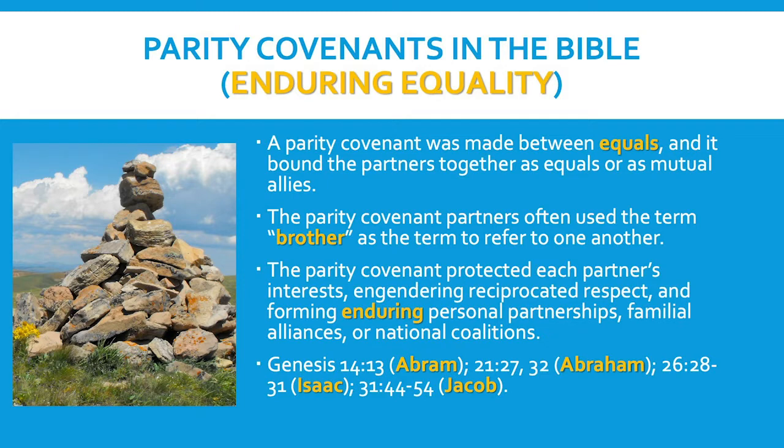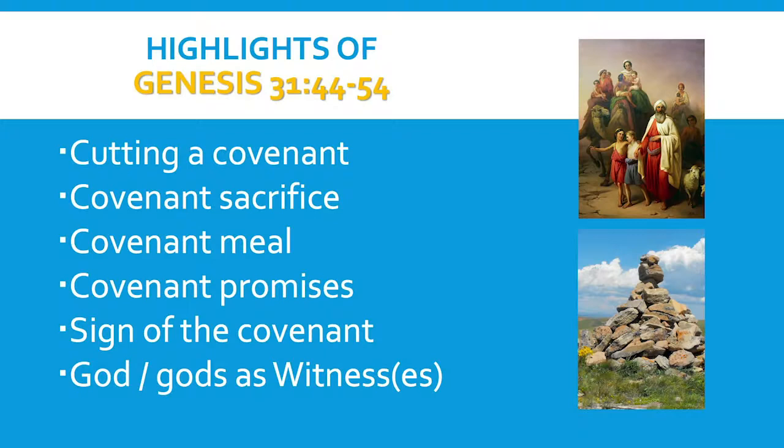In previous lessons, we have studied the Parity Treaties that Abram made with some of his neighbors, the treaty that Isaac made with one of his neighbors, and also the treaty that Jacob made with his father-in-law, Laban. The highlights of that treaty — appearing in Genesis chapter 31, verses 44 through 54 — included the cutting of the covenant as the animals were cut in half, then the covenantal sacrifice which gave way to the covenantal communal meal.